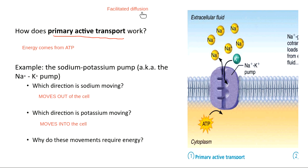If I were doing facilitated diffusion — passive transport going down the concentration gradient — sodium would go into the cell, because there's a lot outside and not as much inside. Potassium would go out, because there's a lot inside and not as much outside. But in the sodium-potassium pump, sodium goes out and potassium goes in. Both of these ions are going uphill — from where there's not a lot to where there's already a high concentration. That's why we have to use energy for both.